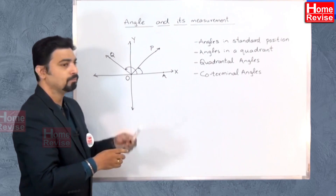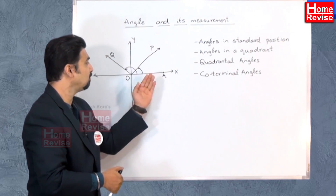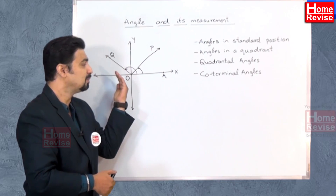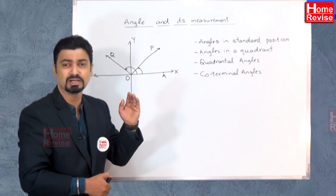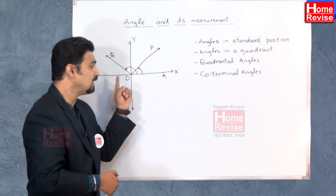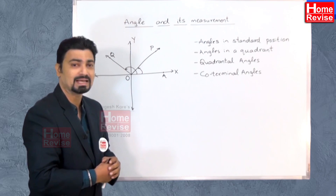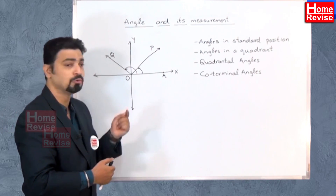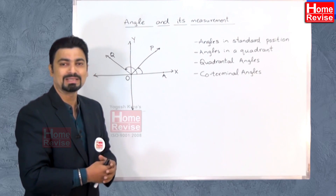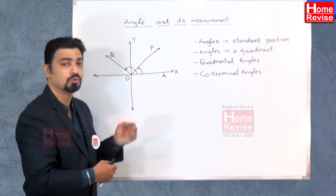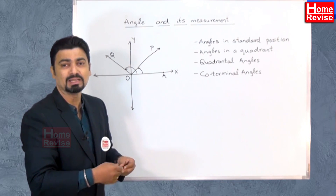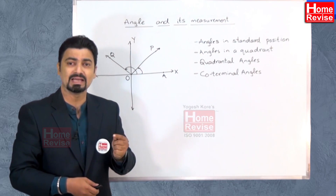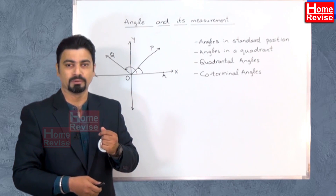Consider angle AOQ — it is a directed angle with initial arm OA and terminal arm OQ, rotated in anti-clockwise direction. It is also a directed angle in standard position because OA lies along the positive x-axis. The terminal arm OQ lies in the second quadrant, so the directed angle AOQ in standard position lies entirely in the second quadrant. Similarly, this can be done for the third and fourth quadrants depending on where the terminal arm lies.